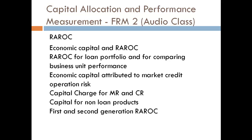In addition to standard loans, many banks offer other products to which capital must be allocated. It is useful to think of the risk of these products in terms of their loan equivalent. The general approach for allocating RAROC for non-loan products is simply to multiply their loan equivalent by the standardized capital factor.